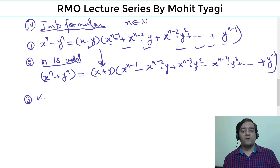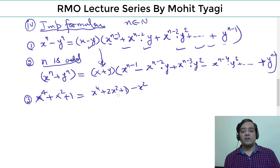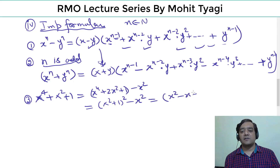Third factorization formula: x⁴ + x² + 1. We rewrite this as (x² + 1)² − x², which is a difference of squares, and factorize it as (x² − x + 1)(x² + x + 1).